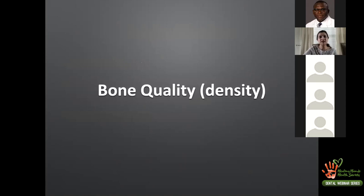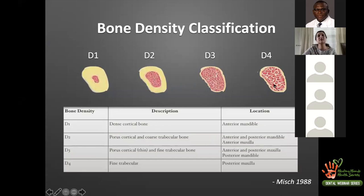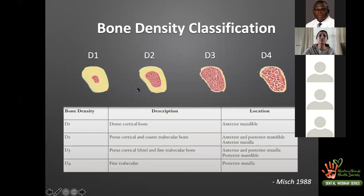Bone density is the second major aspect I want to discuss. Misch's D1–D4 classification describes bone types from D1 — very dense cortical bone found in the anterior mandible — through to D4 — very spongy, fine trabecular bone typically found in the posterior maxilla. When encountering D4 bone, you must modify your protocol: place more implants or wait for a longer healing period, because bone-to-implant contact in D4 bone will be significantly less than in D1 bone.